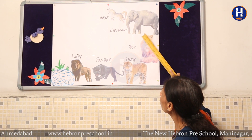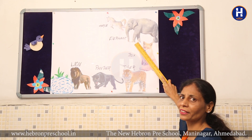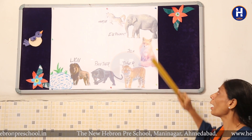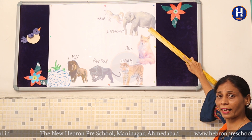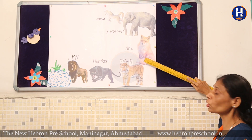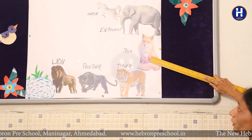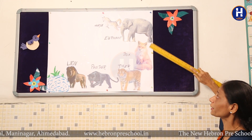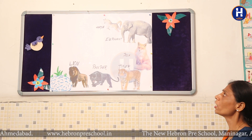Now which animal is this? Yes, elephant. Which animal is standing before the elephant? Elephant ke aage, uske pehle, konsa animal hai? Yes, fox! Fox is standing before elephant — elephant ke before fox khada hai.